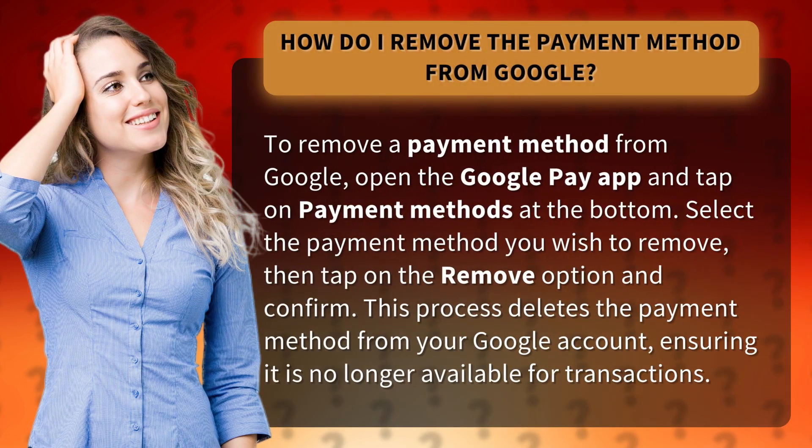To remove a payment method from Google, open the Google Pay app and tap on Payment Methods at the bottom. Select the payment method you wish to remove, then tap on the Remove option and confirm. This process deletes the payment method from your Google account, ensuring it is no longer available for transactions.